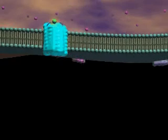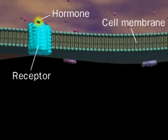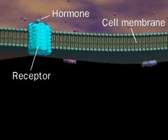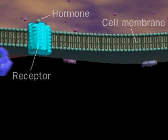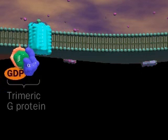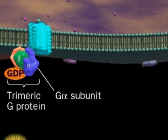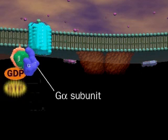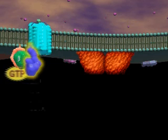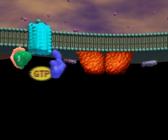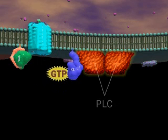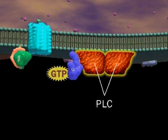Binding of a hormone to a specific receptor in a cell's plasma membrane activates a trimeric G protein. The G-alpha subunit then activates a membrane-associated enzyme, phospholipase C.